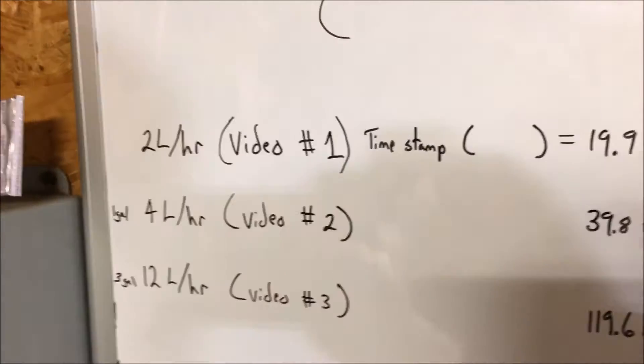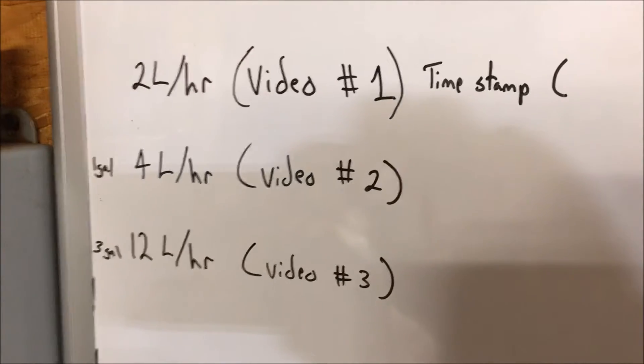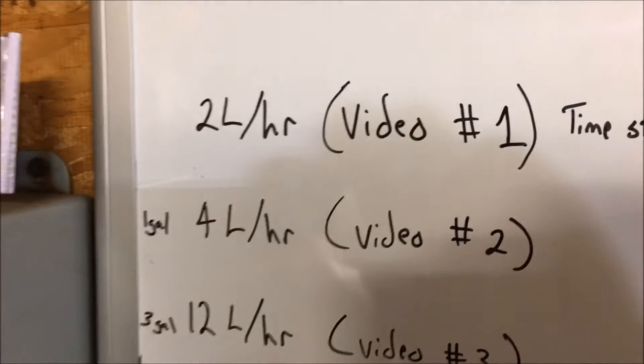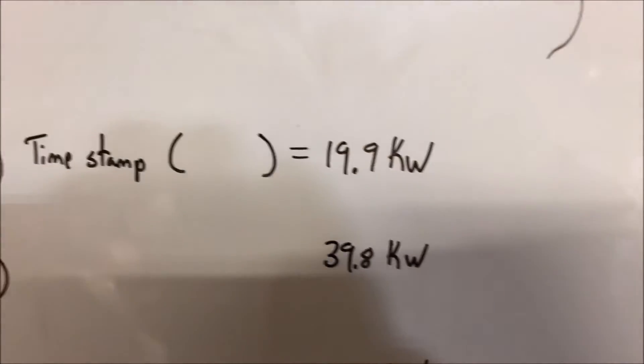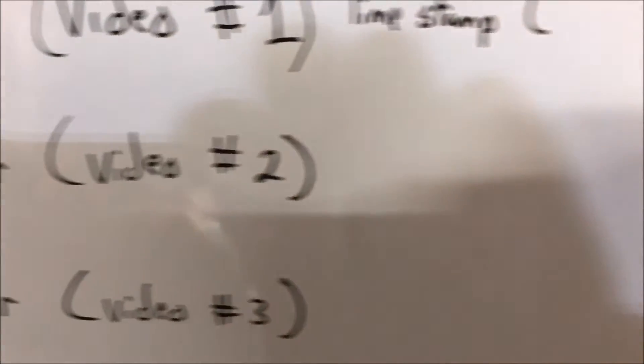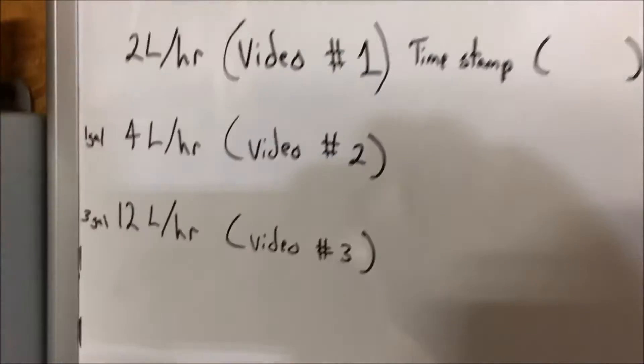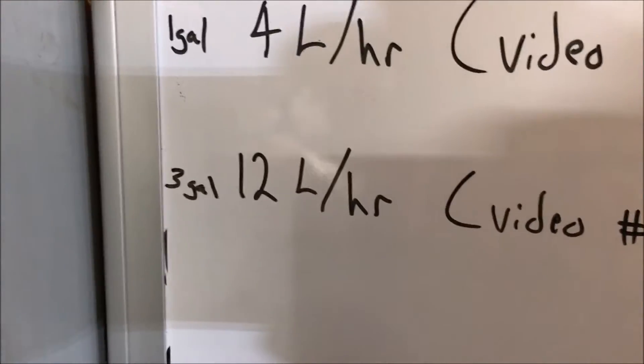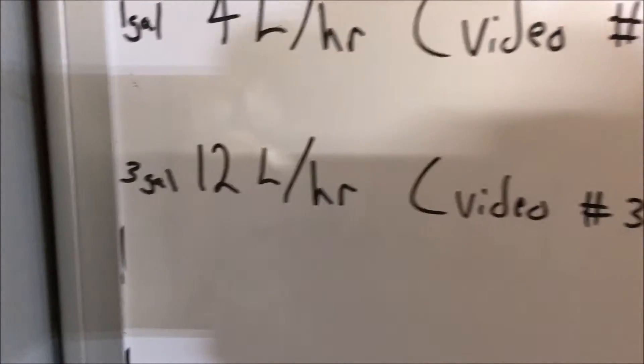In addition to that I'm going to leave three videos in the description, three links, that is going to show you what a two liter an hour flame looks like which is 19.9 kilowatts, what a four liter an hour flame looks like or a burner running at four liters an hour and that is 39.8 kilowatts or something that's running at about three gallons an hour or 12 liters an hour and that's on the order of 119,000 watts of energy.